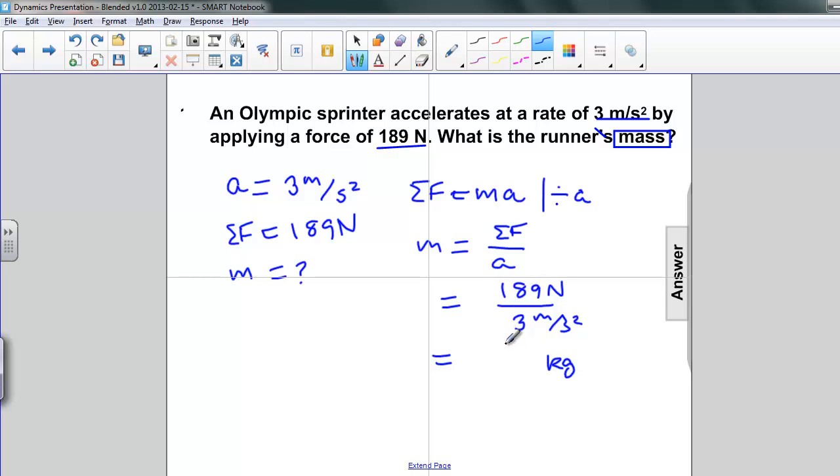And 189 divided by 3 is just 63. So the mass is 63 kilograms.